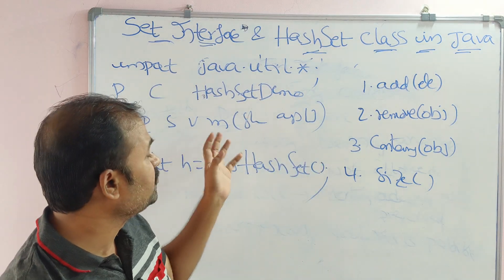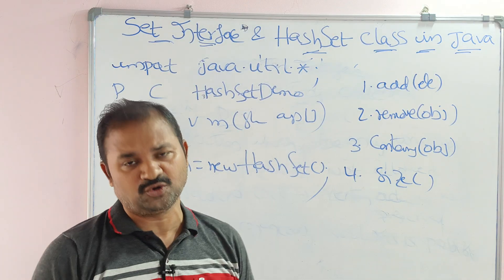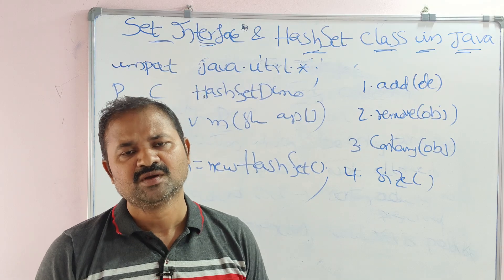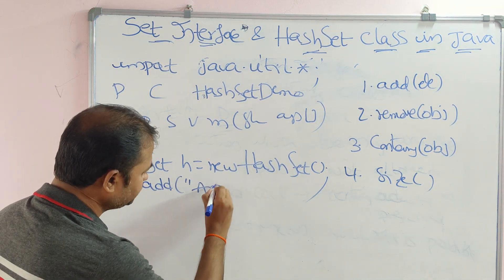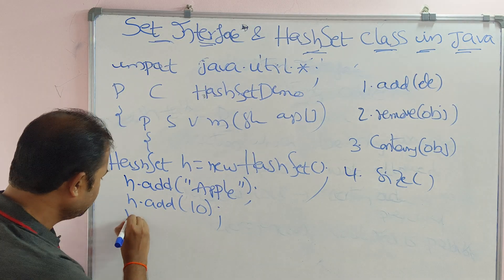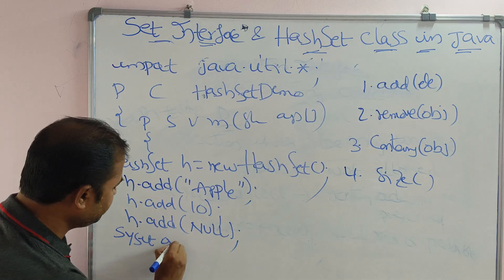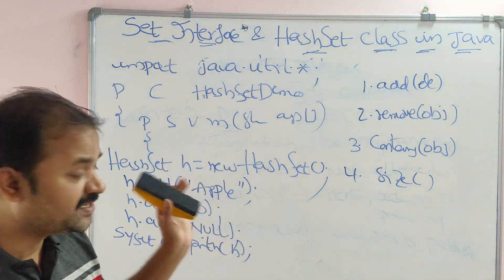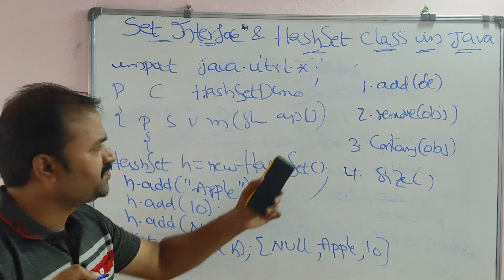The add() method is used to add an element to the set. If the element is already present, it returns false because duplicates are not allowed. If it is a new element, it returns true. So: 'h.add("erp");', 'h.add(10);', and 'h.add(null);' — null insertion is also allowed. Then we display the set using 'System.out.println(h);'. The insertion order is not preserved, so elements may appear in any order.